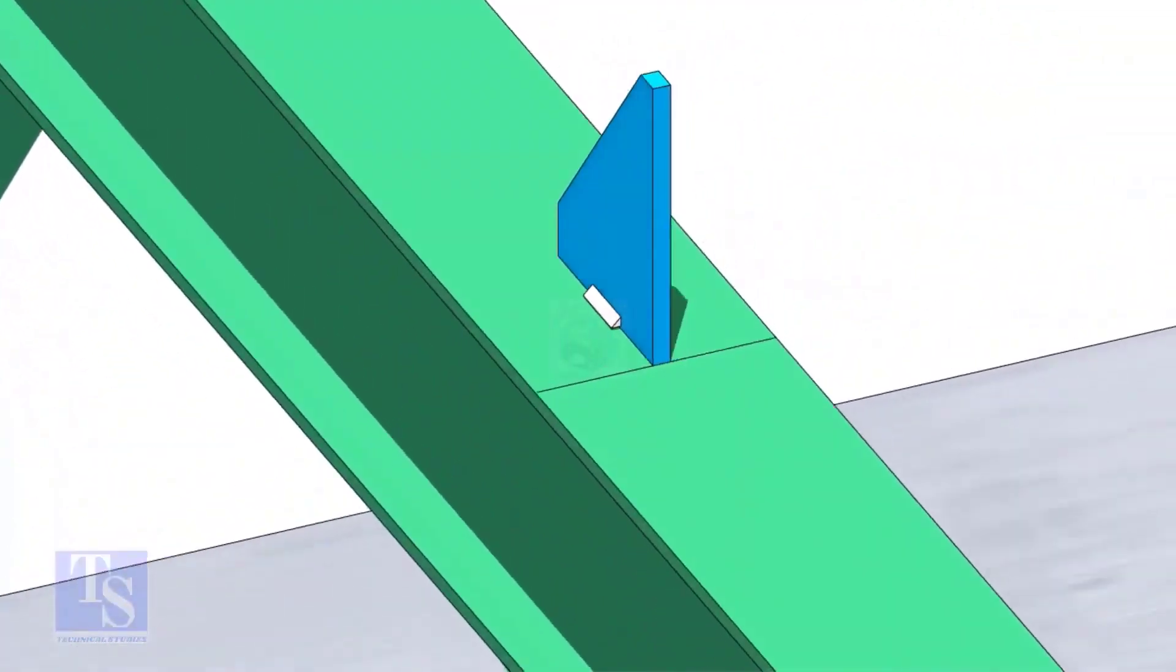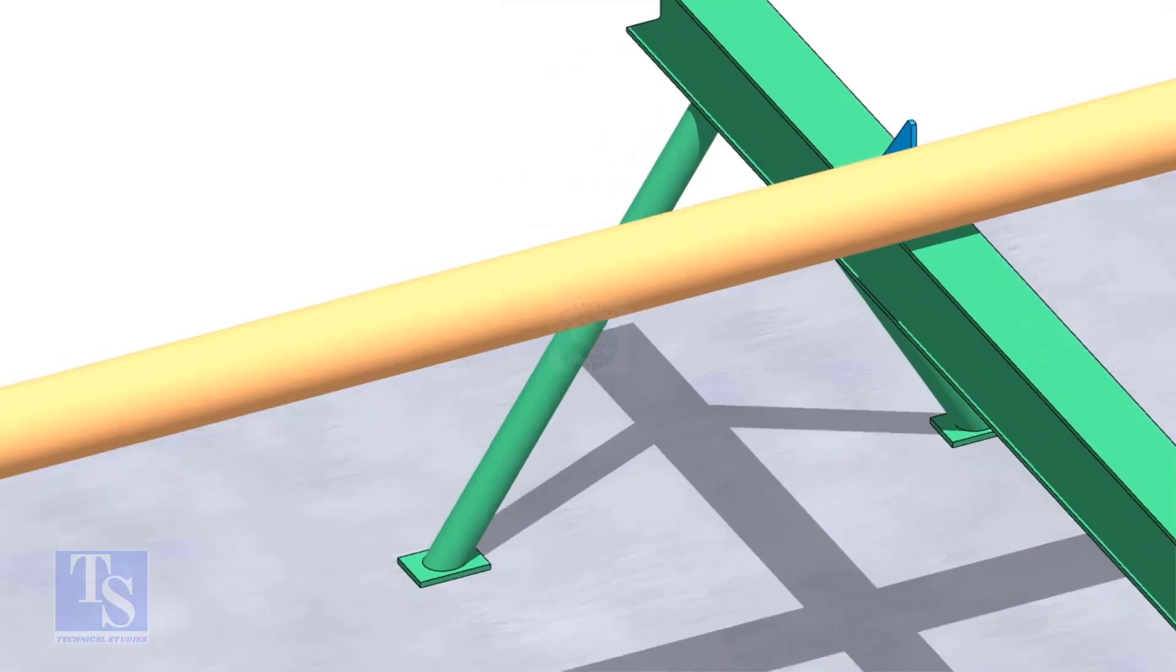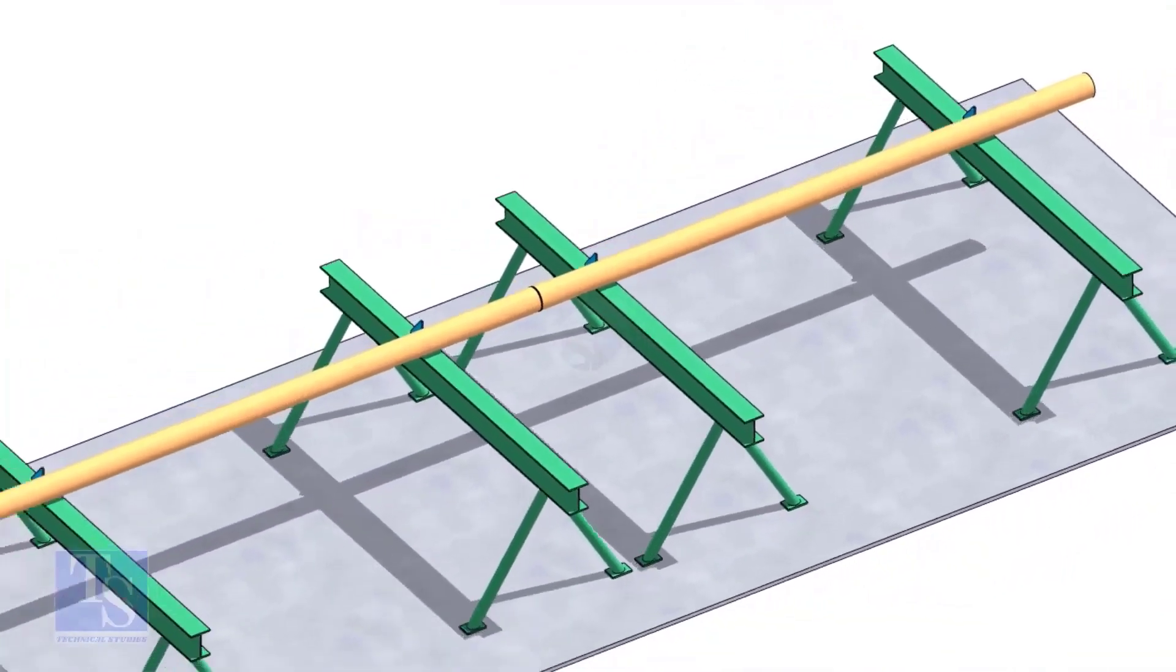Put the pipes on the stands, touching the stopper plates, as shown. The joint shall be in between the supports.